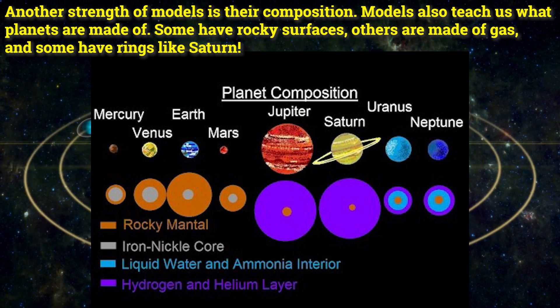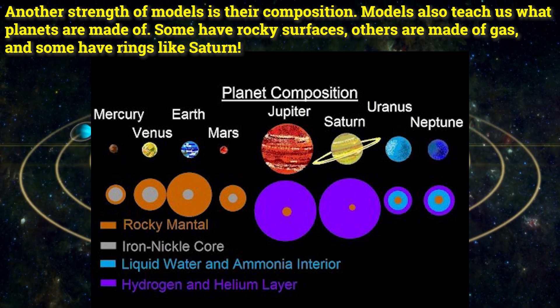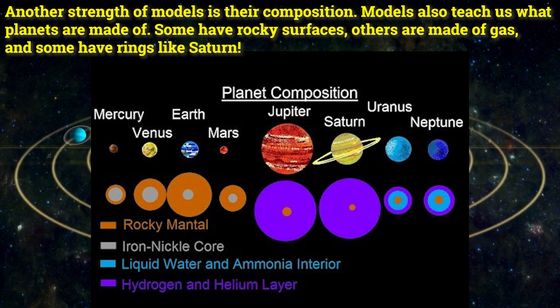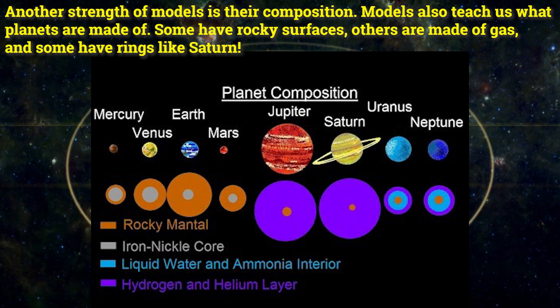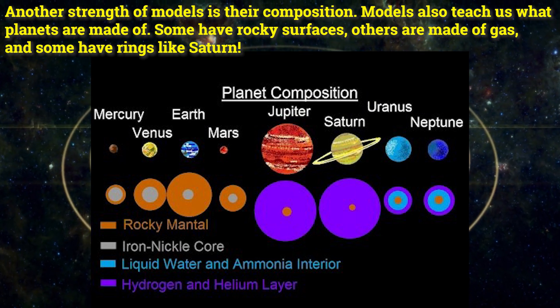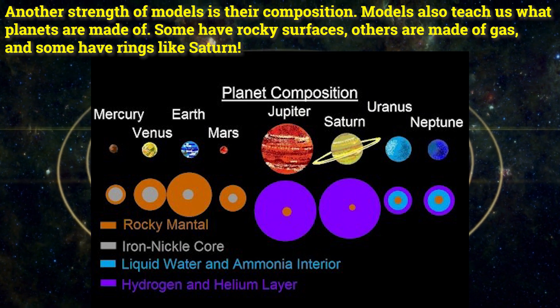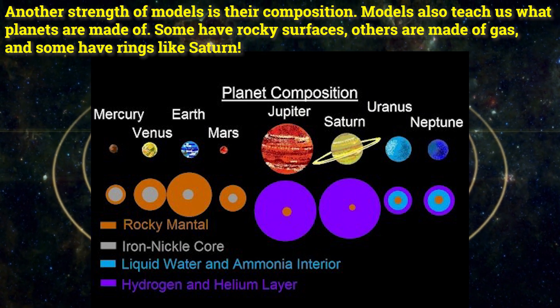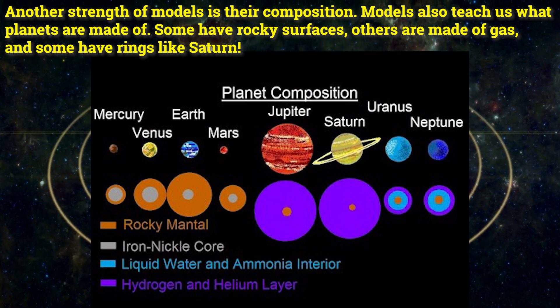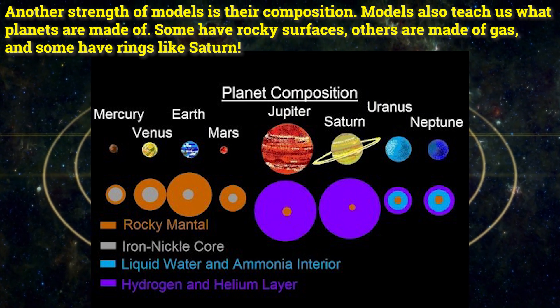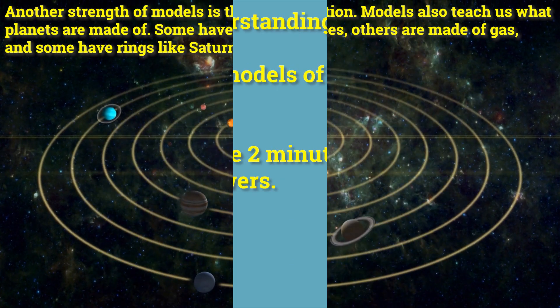Another strength of models is their composition. Models also teach us what planets are made of. Some have rocky surfaces, others are made of gas, and some have rings like Saturn.